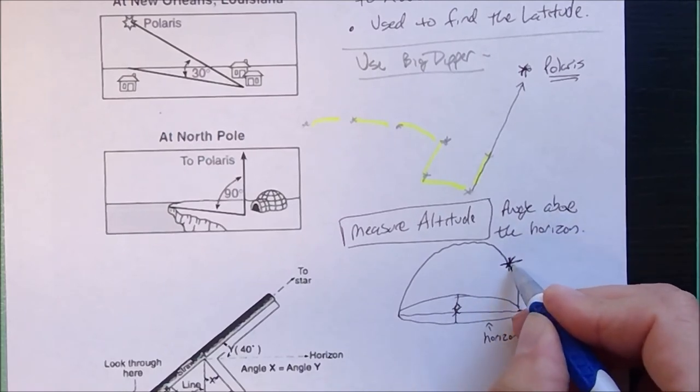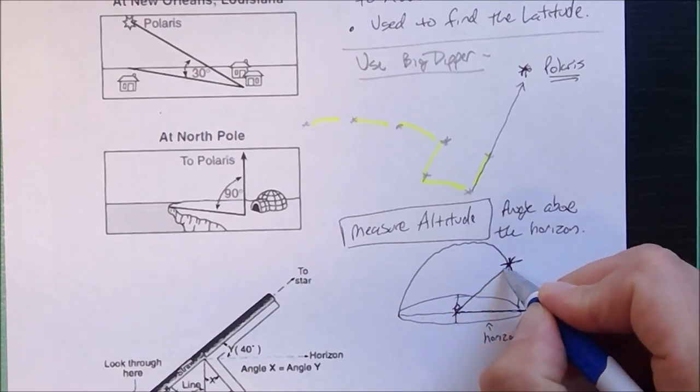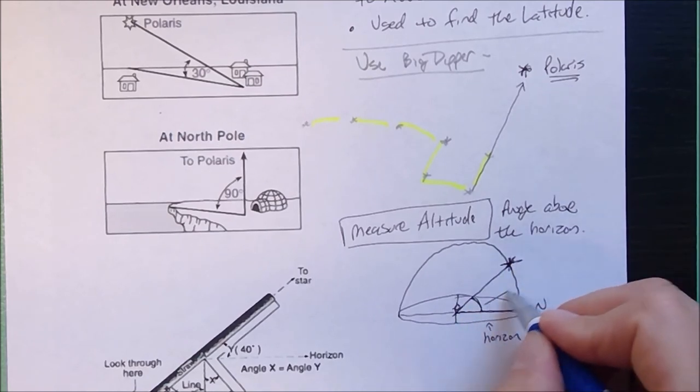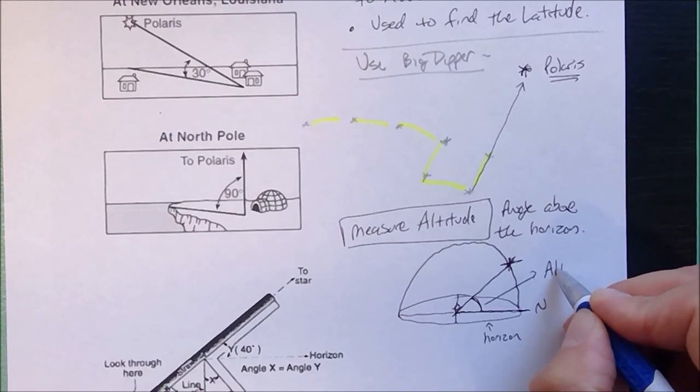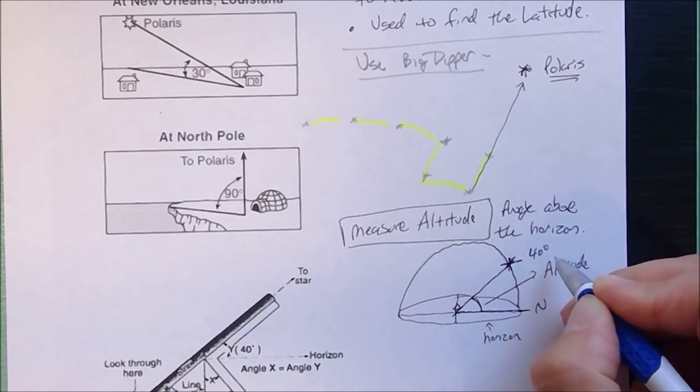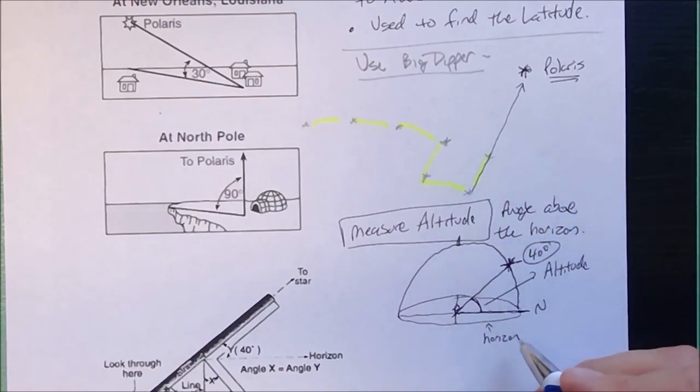Polaris is going to be directly above the northern horizon. You're going to have to measure that up. So it's going to be this angle up from the horizon, which would be the altitude. In this case, let's say I measured that 40 degrees. So 40 degrees up from the horizon, this observer would be at 40 degrees north latitude.